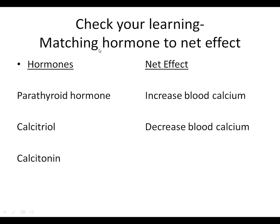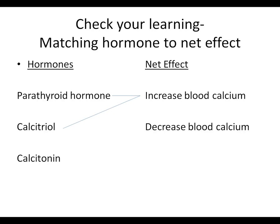Now let's match the hormones to their net effect on blood calcium levels. Parathyroid hormone and calcitriol are paired — what they both do is increase blood calcium levels, although by different mechanisms. Calcitonin is the hormone that decreases blood calcium levels.